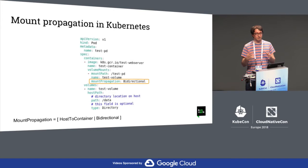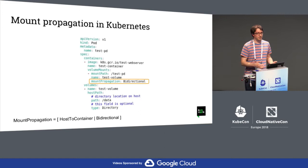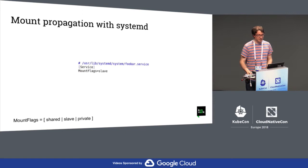If you say bidirectional, it means the pod will be able to mount something in the container and that will be propagated on the host. That can be useful for implementing, for example, flex volumes in Kubernetes, where we actually want a pod to be able to configure volumes on the host.